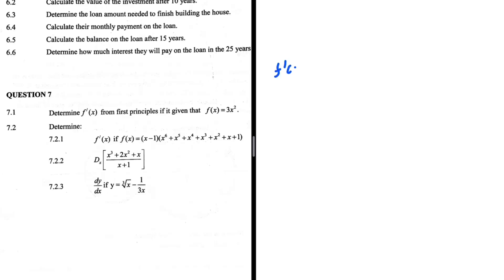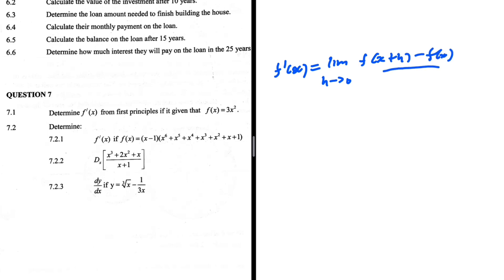Determine f prime of x from first principles, given that f of x equals 3x squared. So f prime of x equals the limit as h tends to zero of f of x plus h minus f of x, everything divided by h. Using first principles — it's quite straightforward.